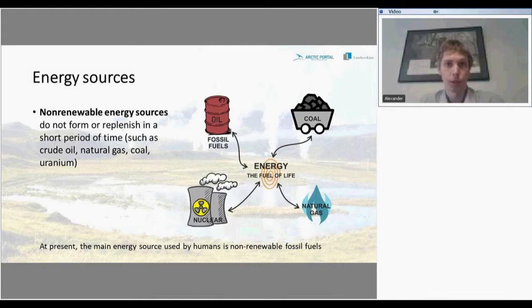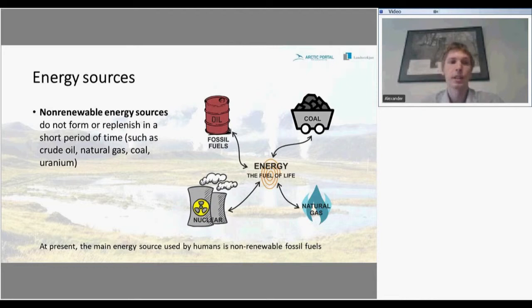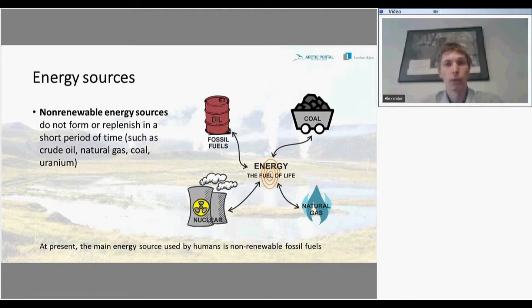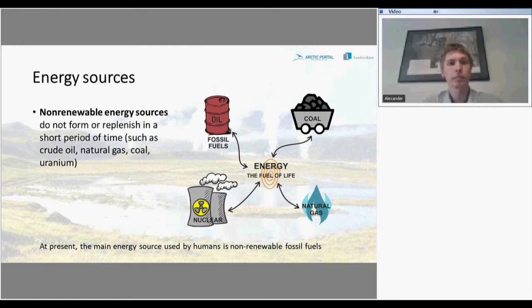There are two basic types of energy sources — they can be either non-renewable or renewable. When we say non-renewable energy sources, we speak about energy sources which cannot form or replenish in a short period of time. For example, all the fossil fuels: crude oil, natural gas, coal, and also uranium. Unfortunately, at present, the main energy source used by humans is non-renewable fossil fuels.